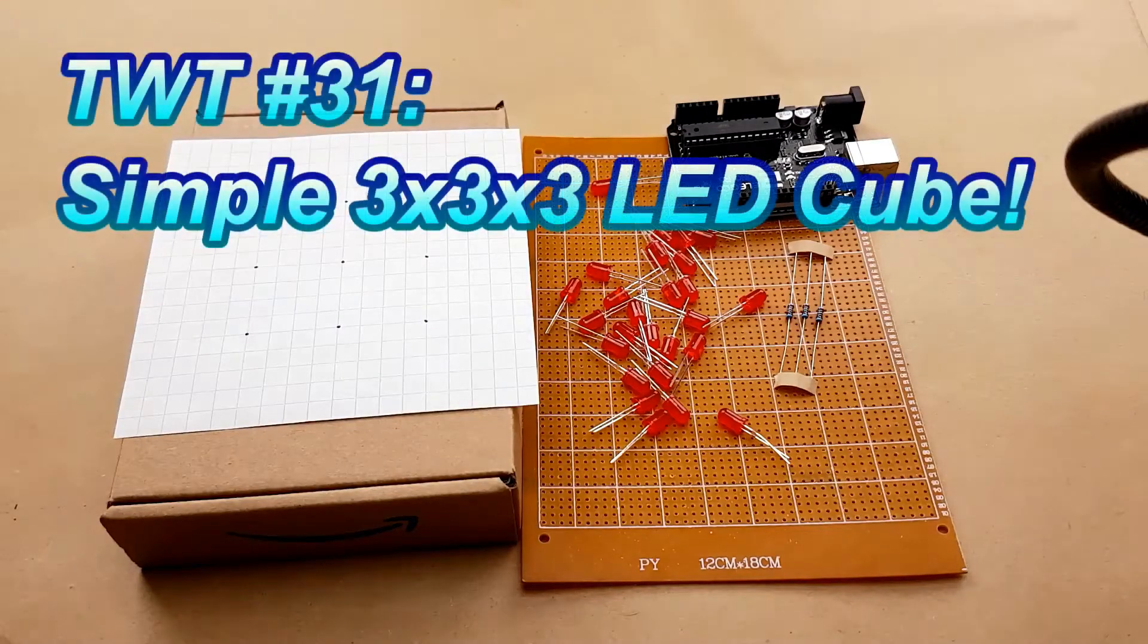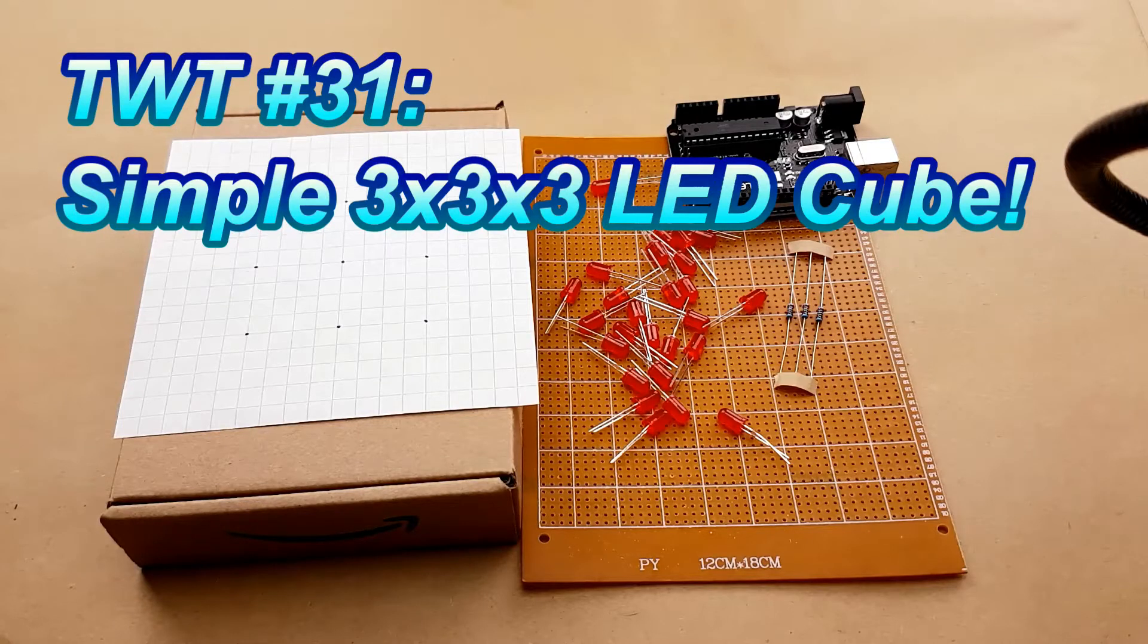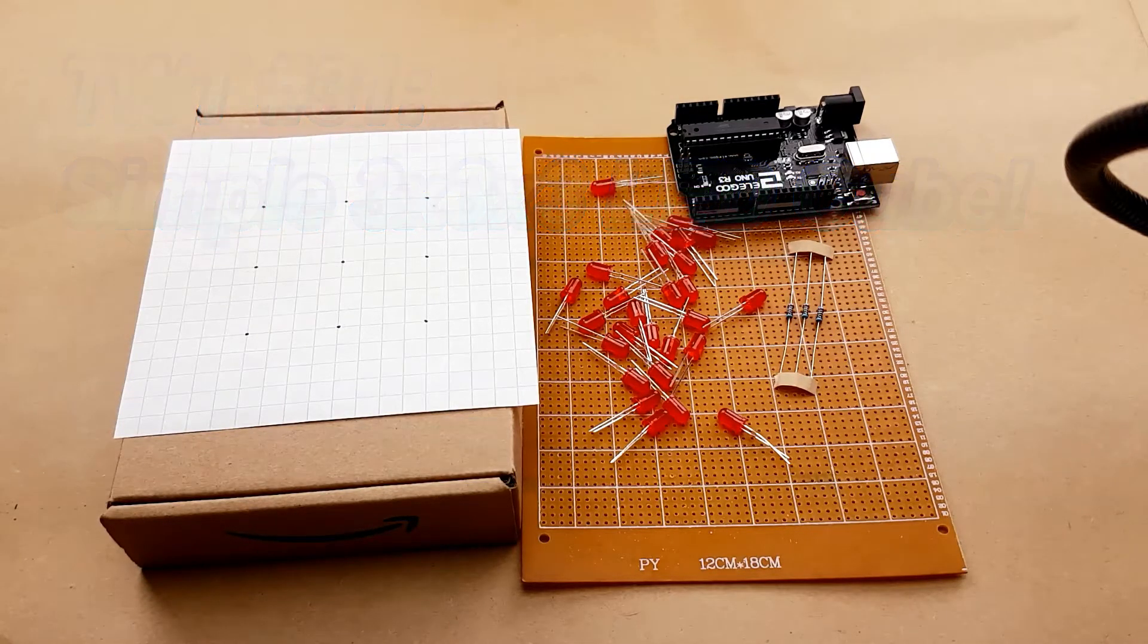Hello everyone! I decided since the LED matrix that I made in the last video is fairly complicated to write code for, that I would try to make something simpler today. Something that's much easier to write Arduino code for, and that is a 3x3x3 LED cube.